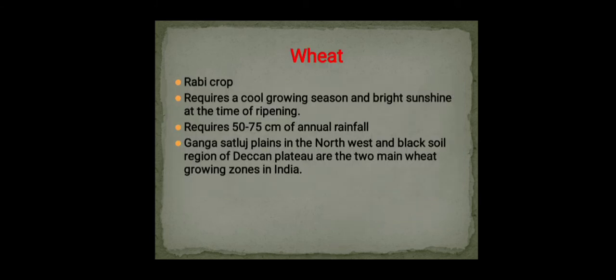Wheat is a rabi crop which requires a cool growing season and bright sunshine at the time of ripening. It requires 50 to 75 cm of annual rainfall. The Ganga-Satluj plains in the northwest and the black soil region of the Deccan Plateau are the two main wheat-growing zones in India. For each crop, you need to learn the climatic region, rainfall, temperature, season, and areas where crops are mainly grown.